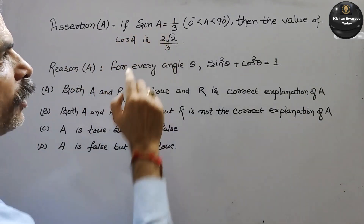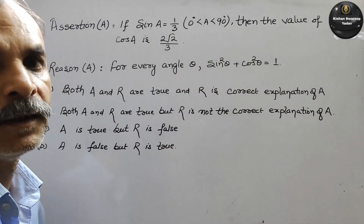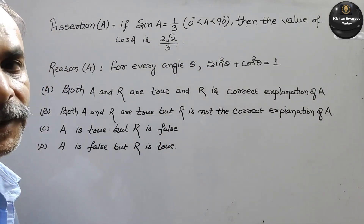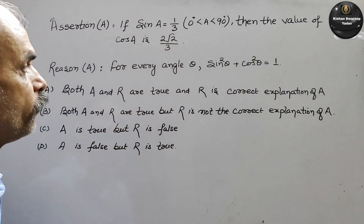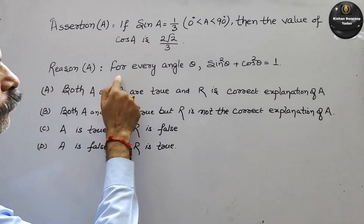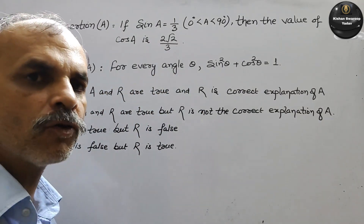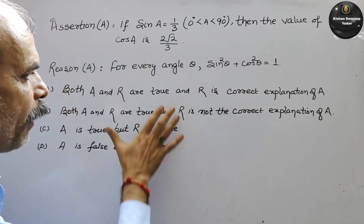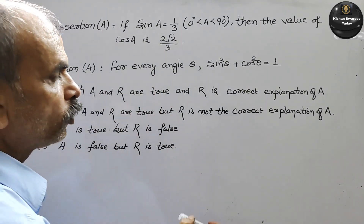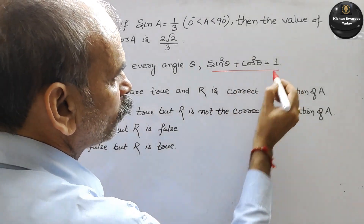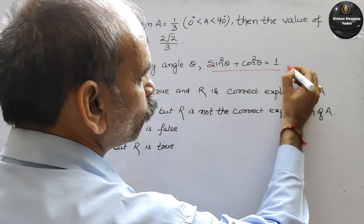If sin A = 1/3 (where 0° < A < 90°), then the value of cos A is 2√2/3. The reason given is: for every angle theta, sin²θ + cos²θ = 1. तो reason को देखो — यह एक identity है, that means it's true. तो यह आपका true हो गया.